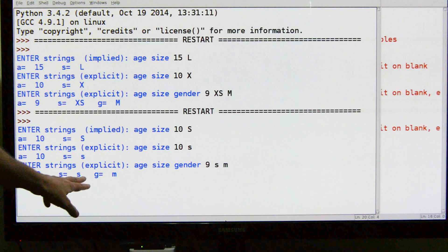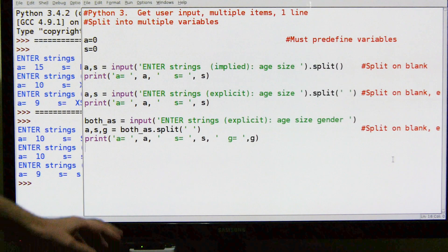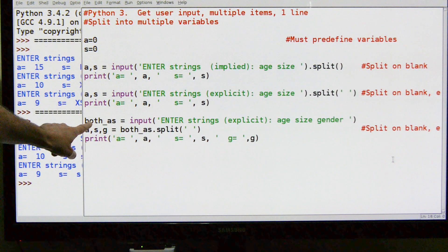And we got 9, s, and m. So what happened was it put these three variables in here.